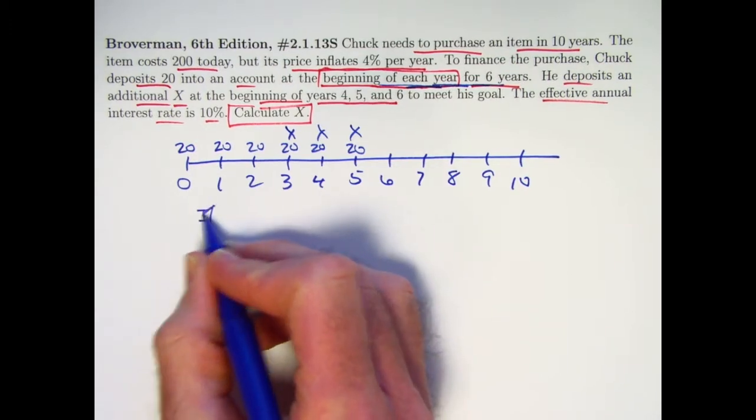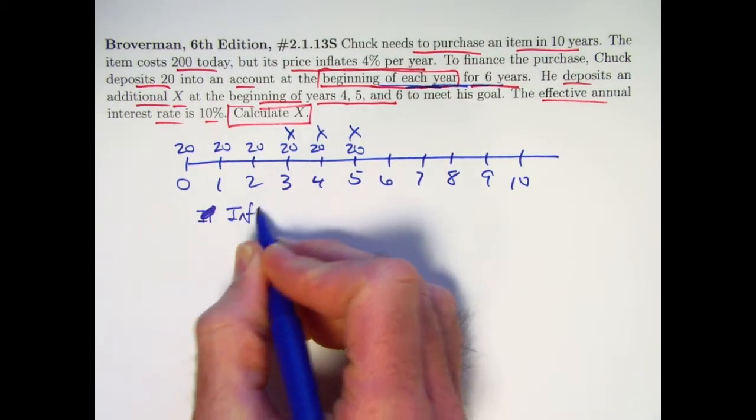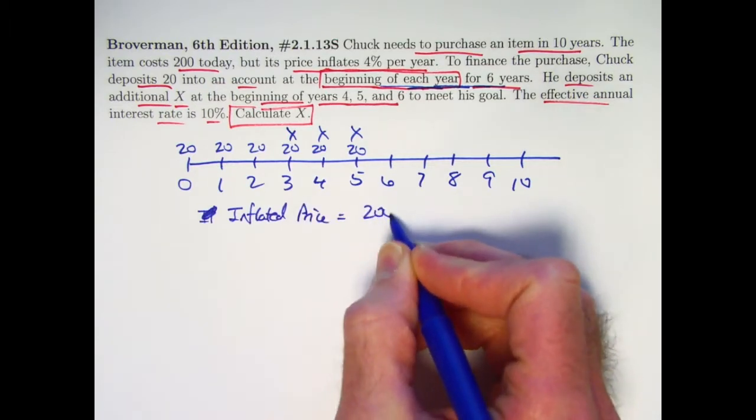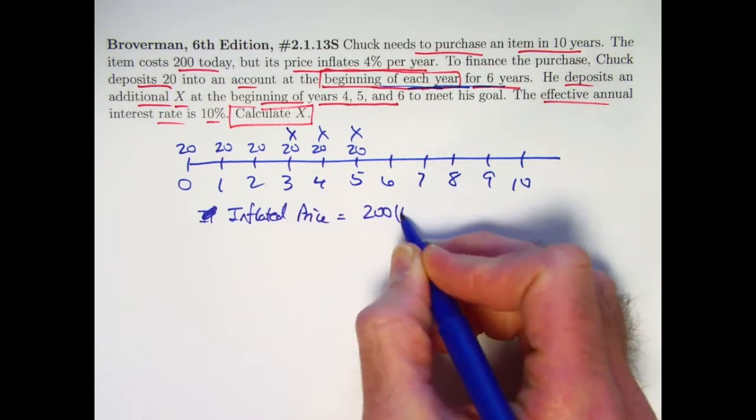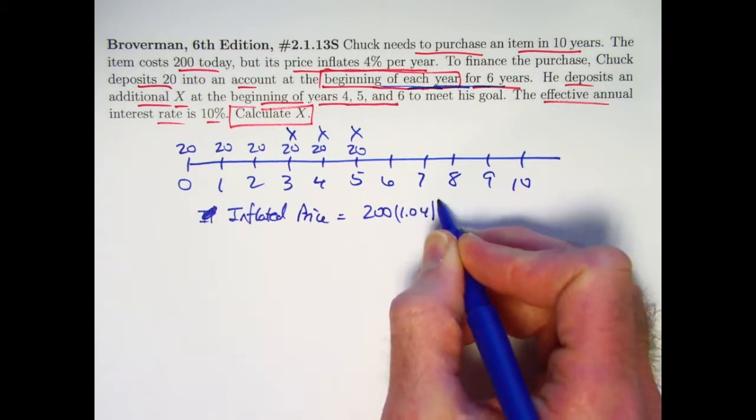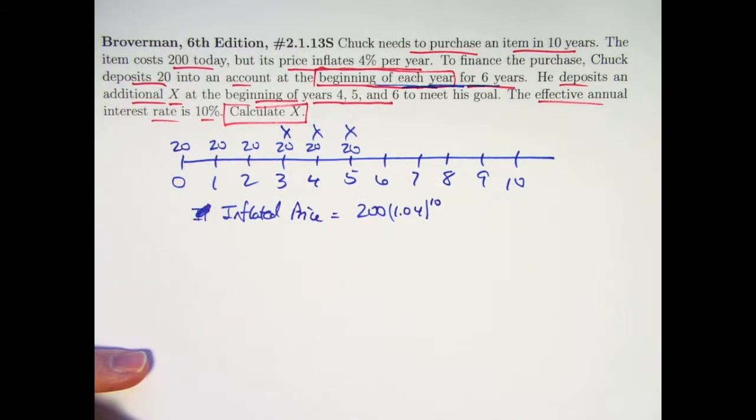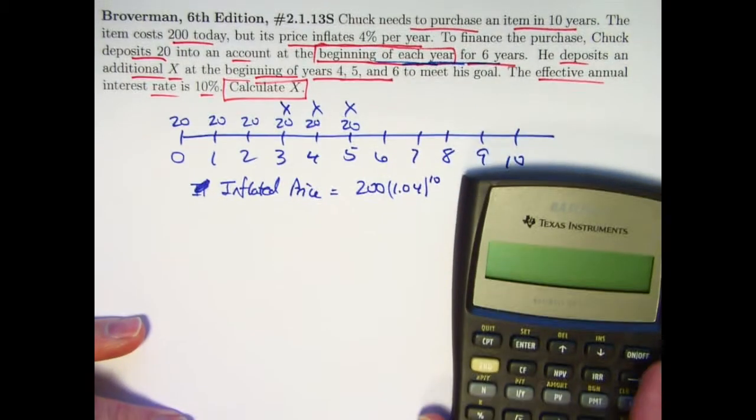We want the future value of all these things to equal the inflated price after 10 years. What is the inflated price? Inflated price: if inflation is 4% per year, we'll take 200 times 1.04 to the 10th power.